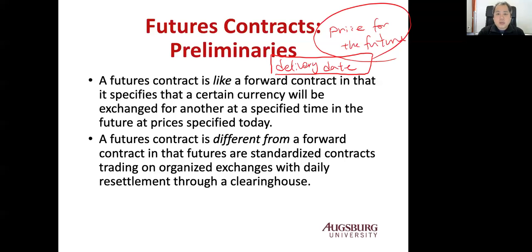The forward contract is a bilateral contract, so you find a counterpart that has some needs, buy or sell the forward contract, and make a bilateral contract. But futures is a more structural contract — it specifies that currency will be exchanged for another at a specific delivery date and for a futures price.